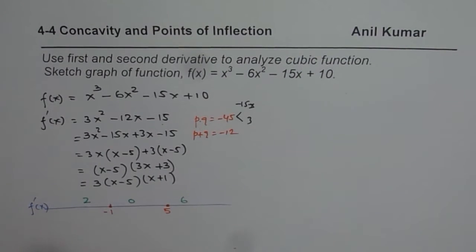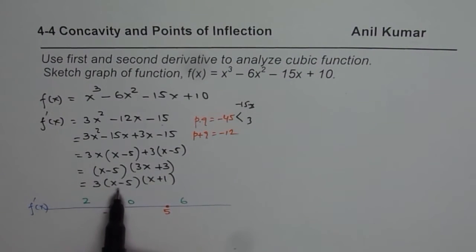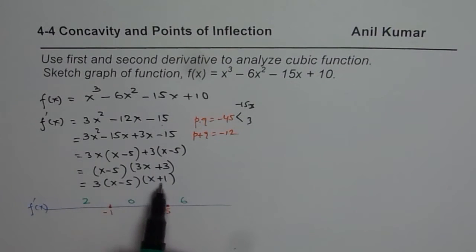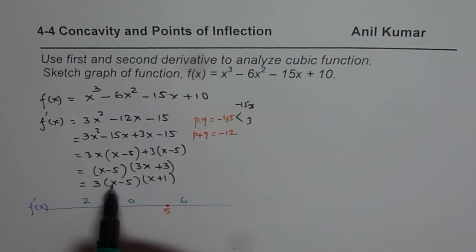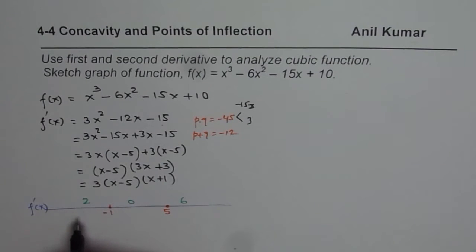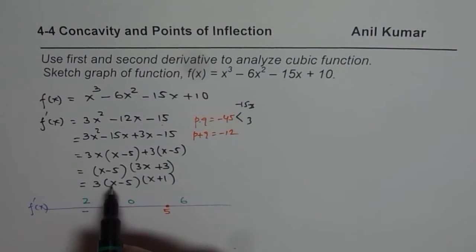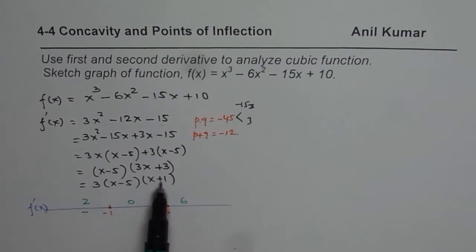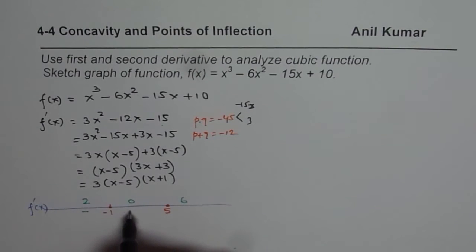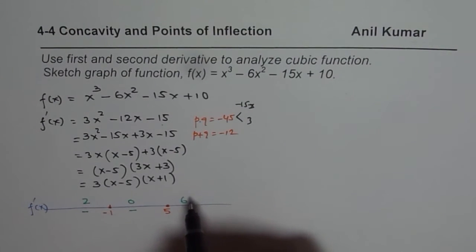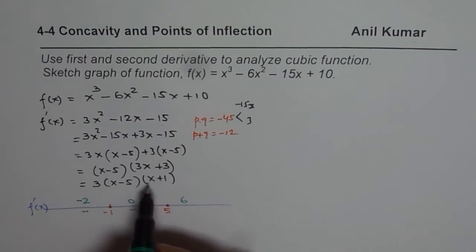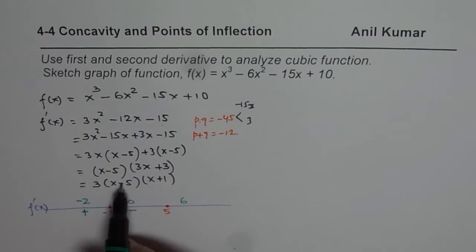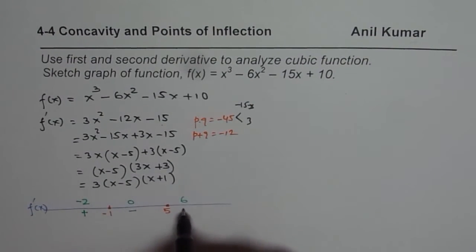Good test points are −2, 0, and 6. I'm sorry — the middle test point should be 0, between −1 and 5, not 2. If I substitute −2, the derivative is positive. For x = 0, it is negative. And for x = 6, it is positive.